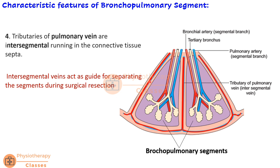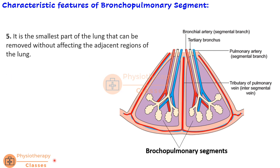The intersegmental veins act as a guide for surgeons when separating segments during surgical resection. One bronchopulmonary segment can be removed without affecting the adjacent segments or the rest of the lung. Before this knowledge existed, a lobectomy — removal of an entire lobe — had to be performed. Now, if disease is limited to one segment, only that segment needs to be resected. The bronchopulmonary segment is therefore the smallest part of the lung that can be surgically removed without affecting adjacent regions.